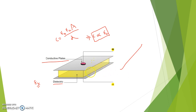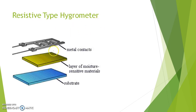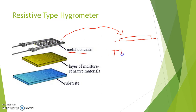Now to measure humidity, we can also use resistive sensors. So for the resistive type hygrometer — this is the basic schematic. There is the metal contact. This is the layer of moisture-sensitive material and this is the substrate. First, the substrate is there. On the substrate we place a layer of the moisture-sensitive material, then we place this pattern of metal contact on it. The metal contact pattern basically looks like an interdigitated structure.